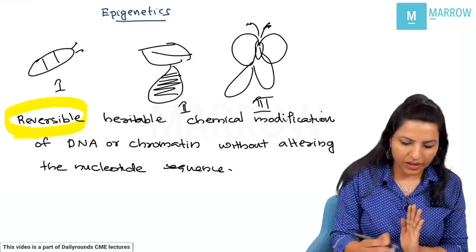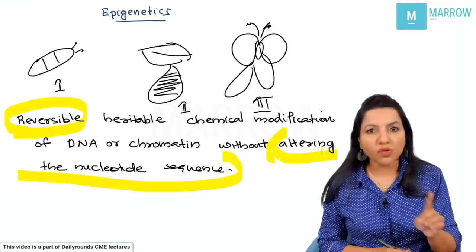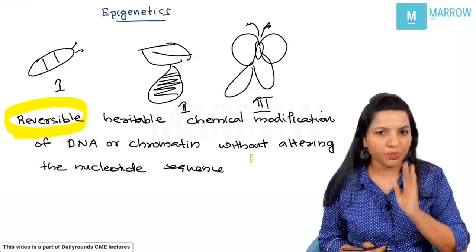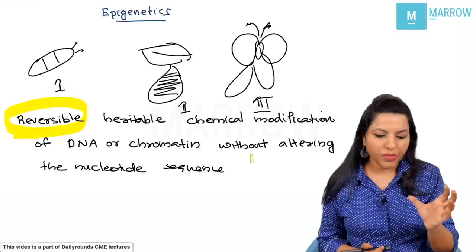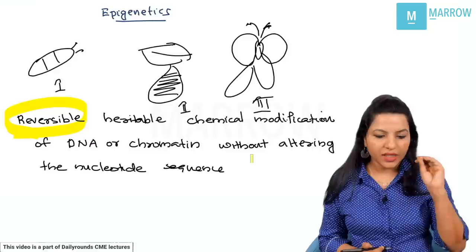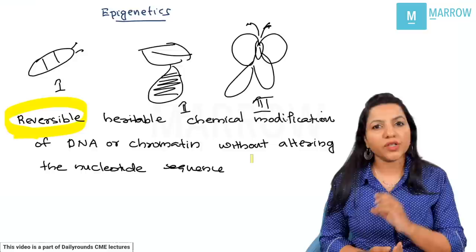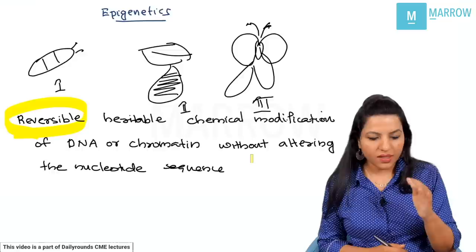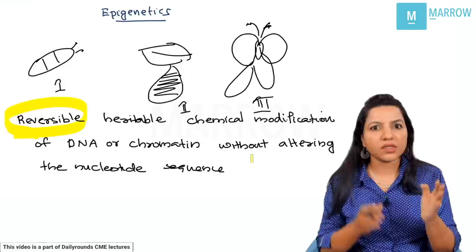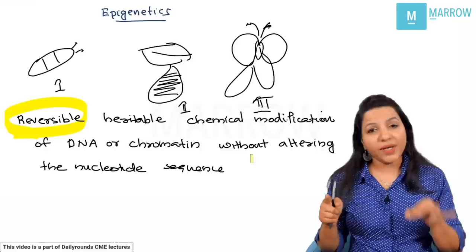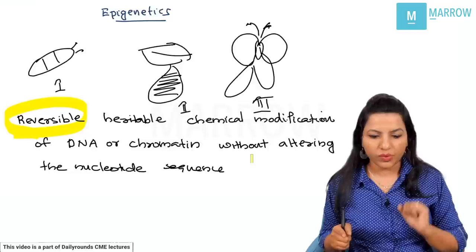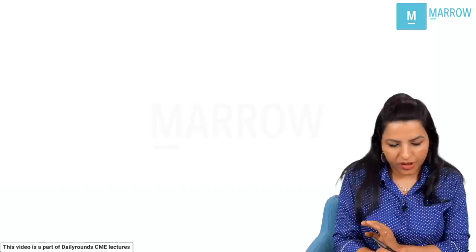In epigenetics there is no alteration in nucleotide sequence — this is one key difference from mutation, where there is alteration in nucleotide sequence, and mutation is permanent while epigenetics is reversible. Comparing with polymorphism: polymorphism is also a normal variation with alteration in nucleotide sequence. So whether it is polymorphism or mutation, there is alteration in nucleotide sequence, but in epigenetics there is no variation in the nucleotide sequence.